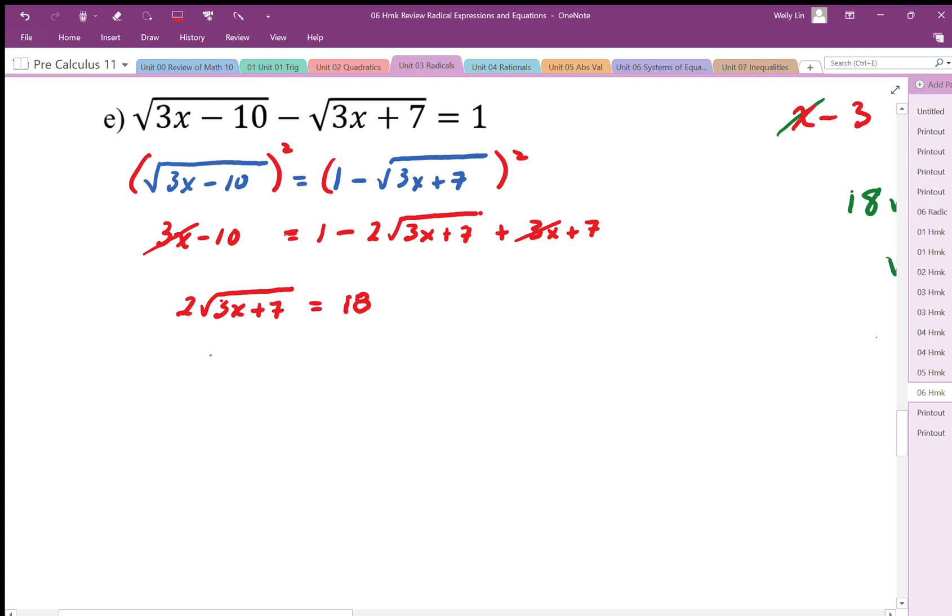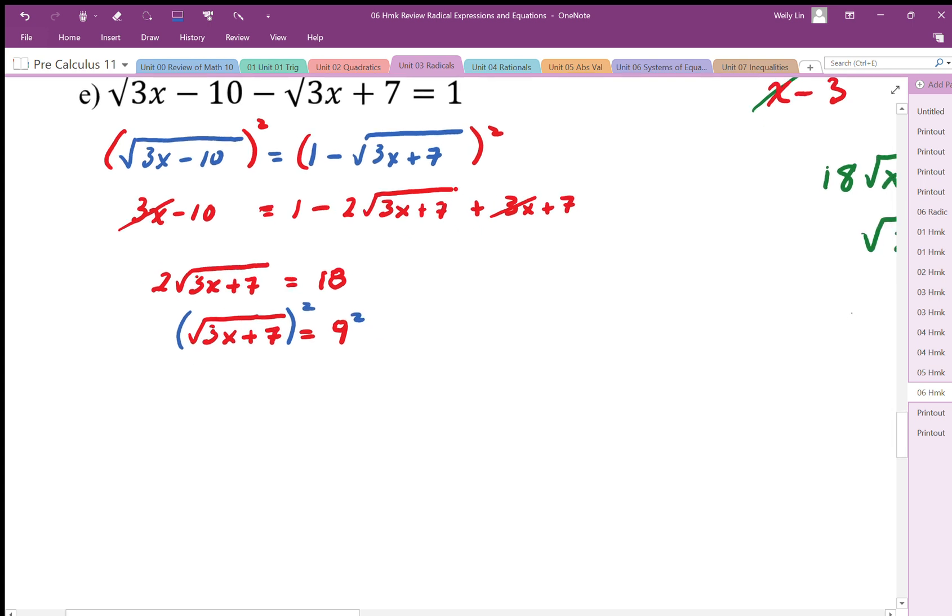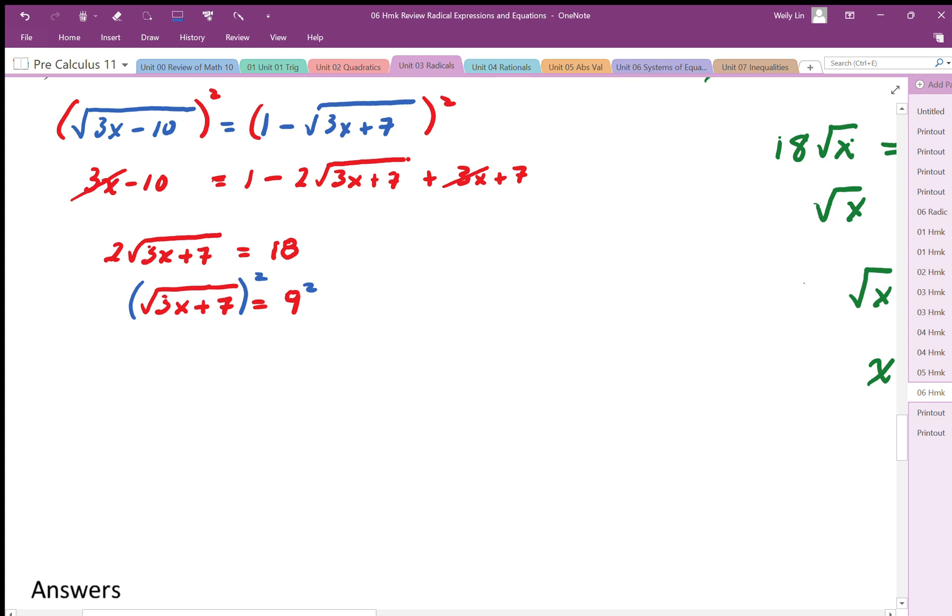I'm going to divide both sides by 2. And then I'm going to get rid of that square root by squaring both sides. And nicely, this works out nicely because I don't have a binomial term on the right hand side when I square this.